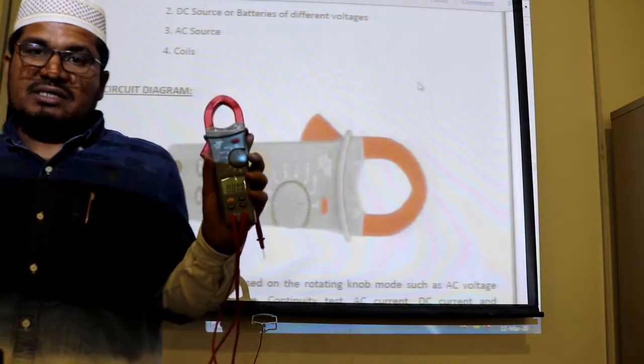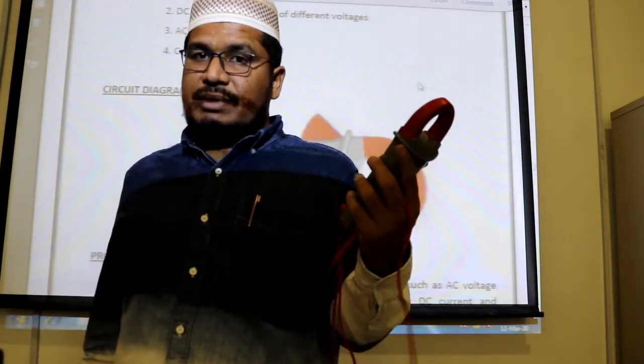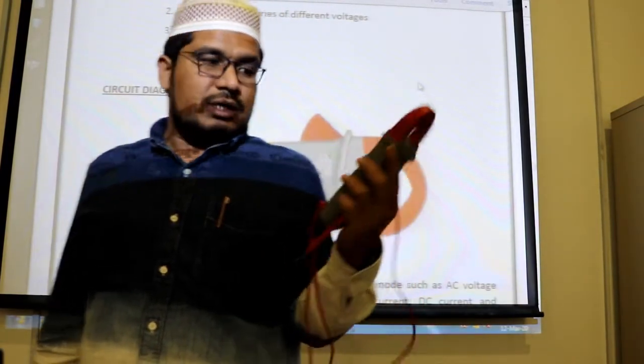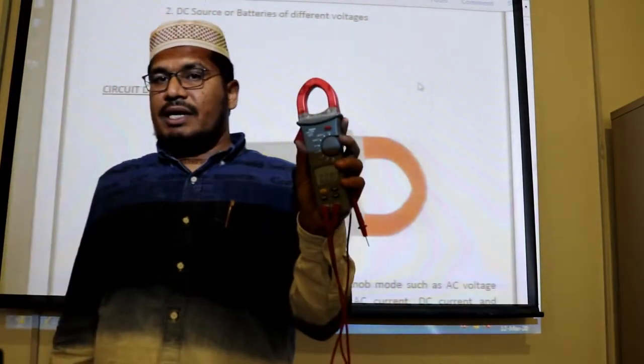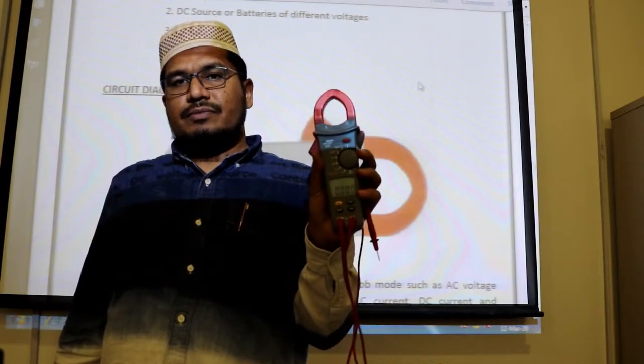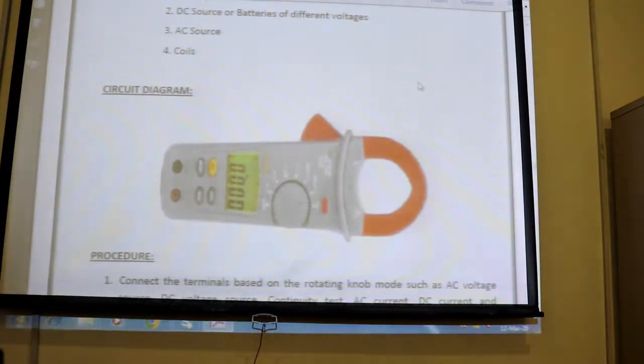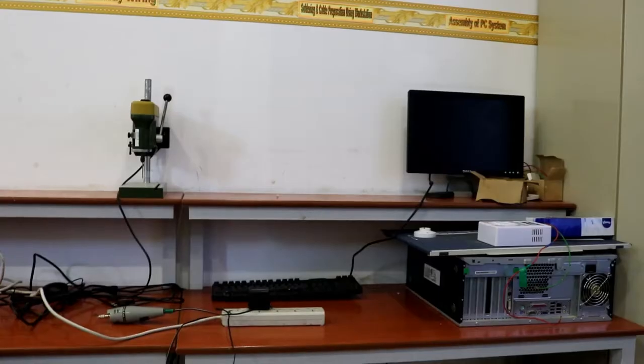So in Saudi Arabia, the frequency is 60 hertz. So we can measure that also with this device. So one by one, we will study how to measure the different quantities of a circuit.